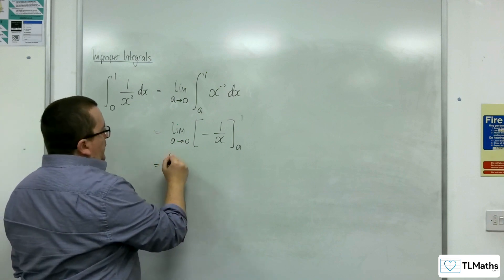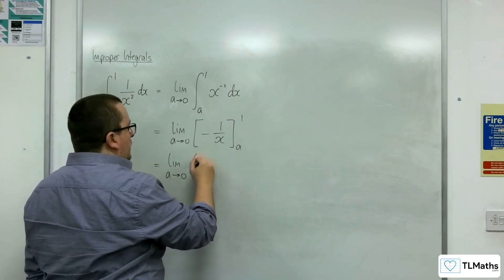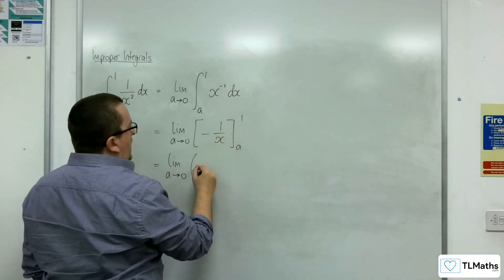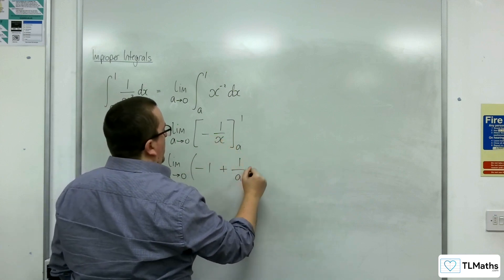So this is equal to the limit as a tends to 0 of, substituting the 1, we get minus 1, substituting the a, and we're subtracting here, so plus 1 over a.